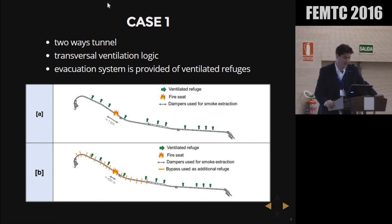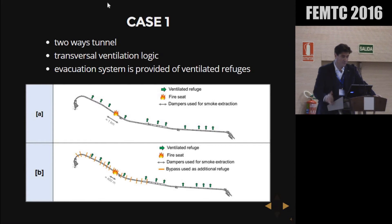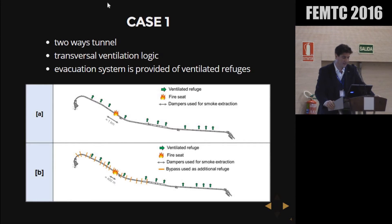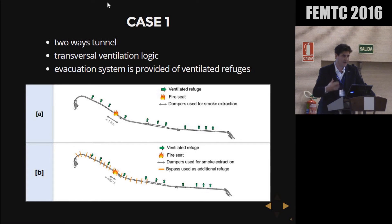The first case study I present to explain this approach is a two-way tunnel where a transversal ventilation logic is applied. The evacuation system is provided with ventilated refuges. This is a six-kilometer-long tunnel. Starting from two or three years ago, the company that manages this tunnel has been developing a project to finalize it, arriving at a final configuration of two one-way tubes. The problem for the company is to identify a way to measure the risk level associated with the tunnel during the construction phase.